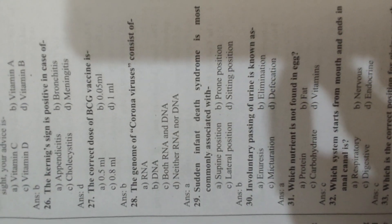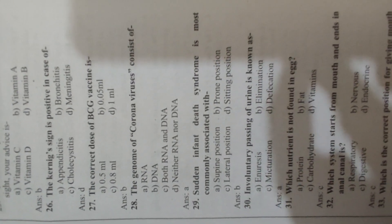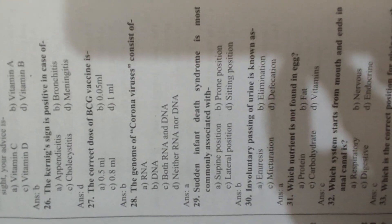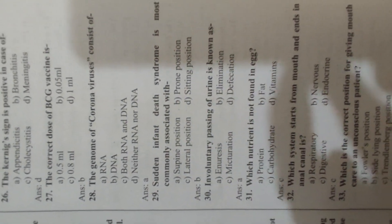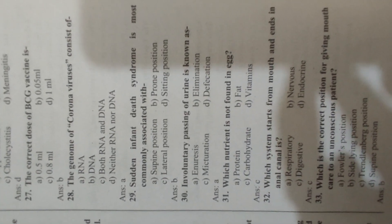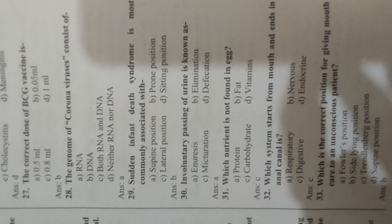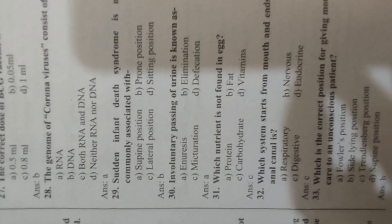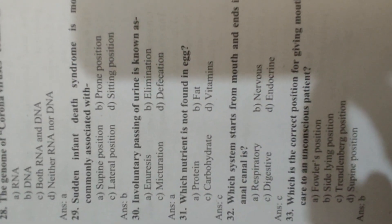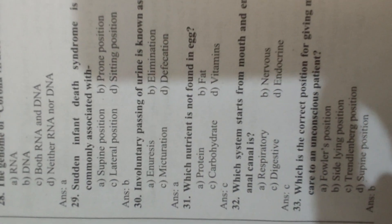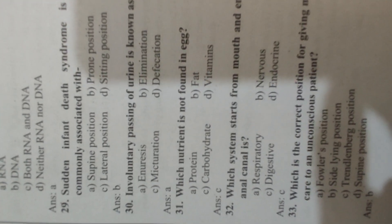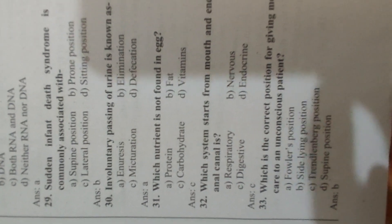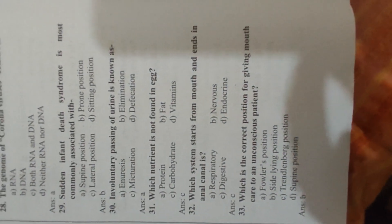Question 29: Sudden infant death syndrome is most commonly associated with Answer D, prone position. Question 30: Involuntary passing of urine is known as Answer A, enuresis. Question 31: Which nutrient is not found in egg? Answer C, carbohydrate.